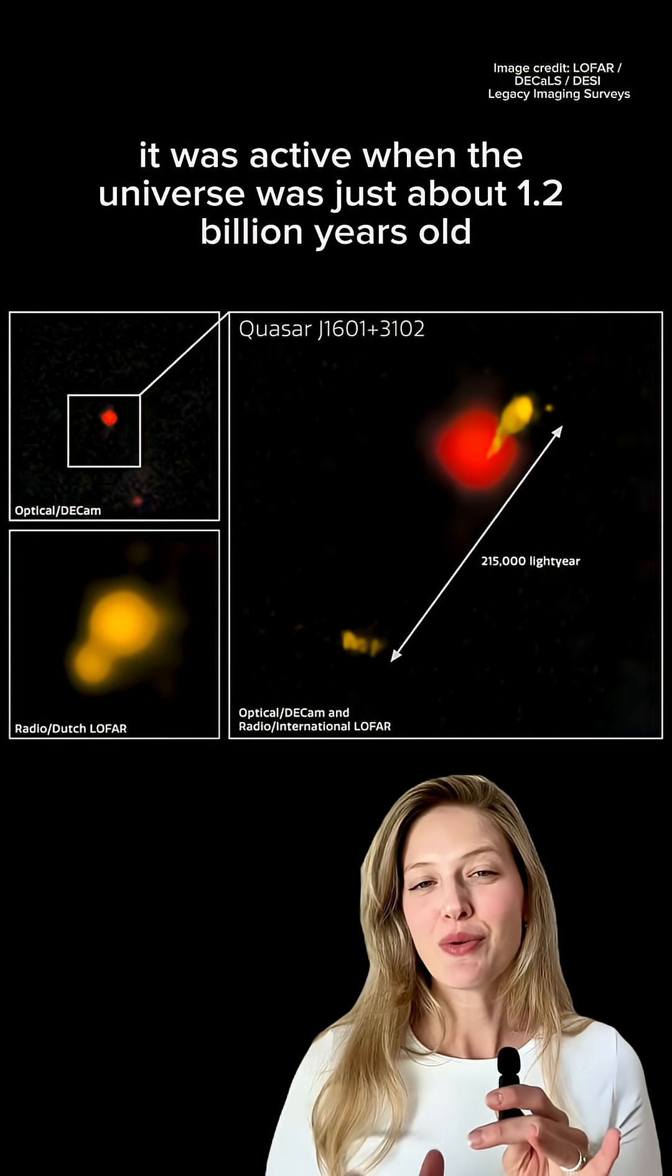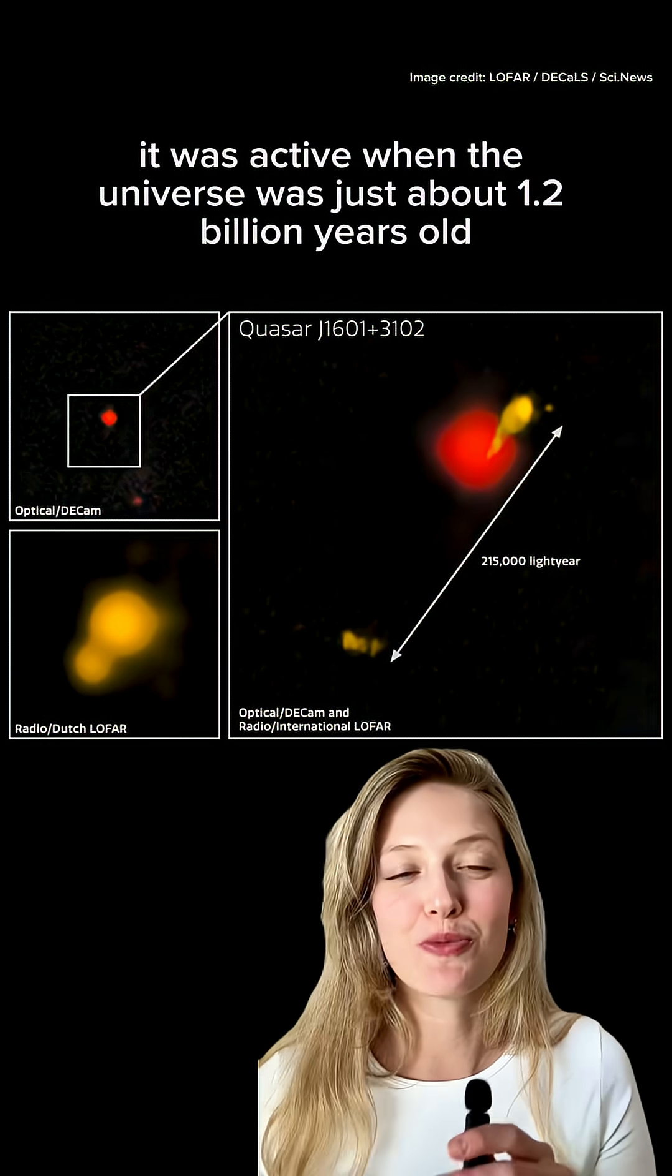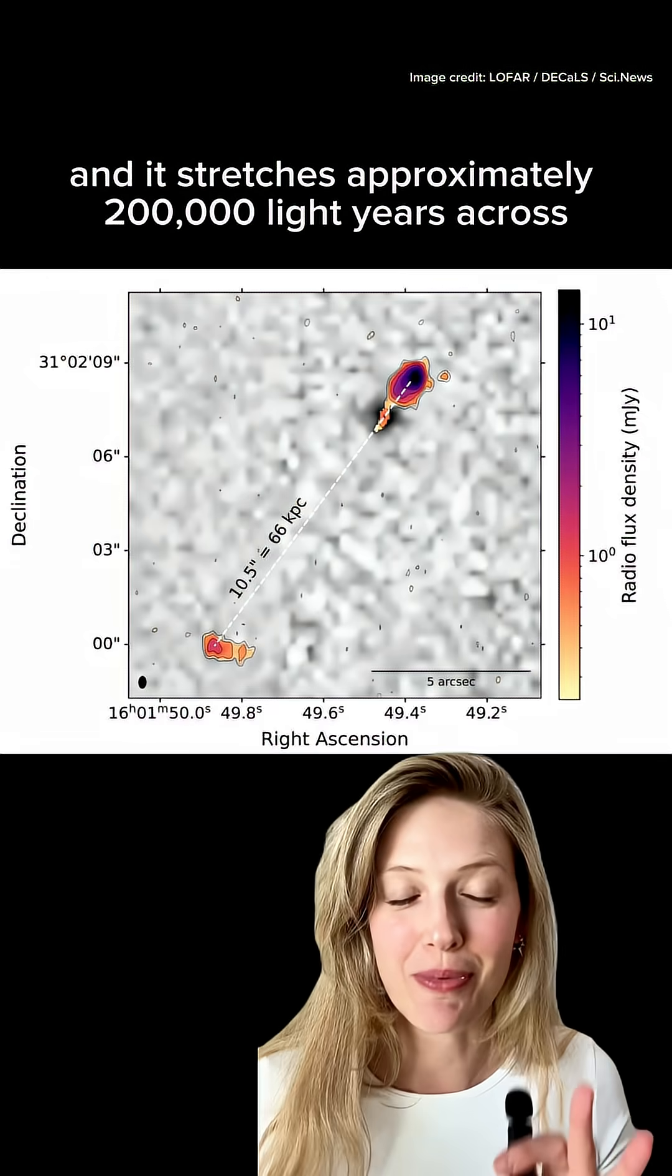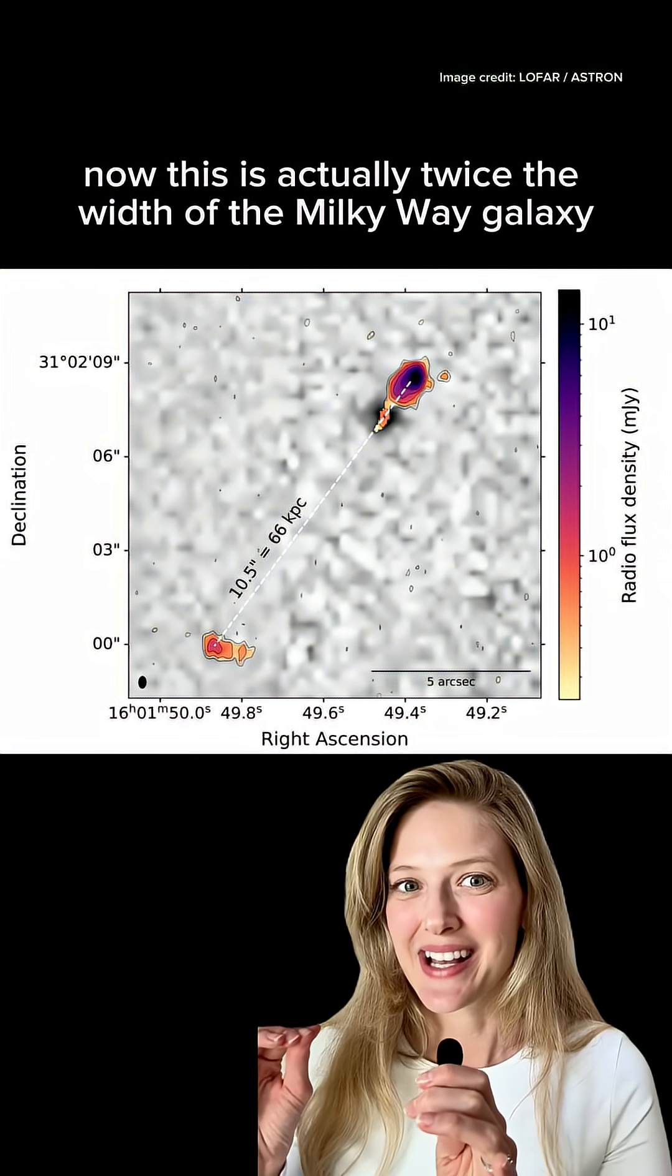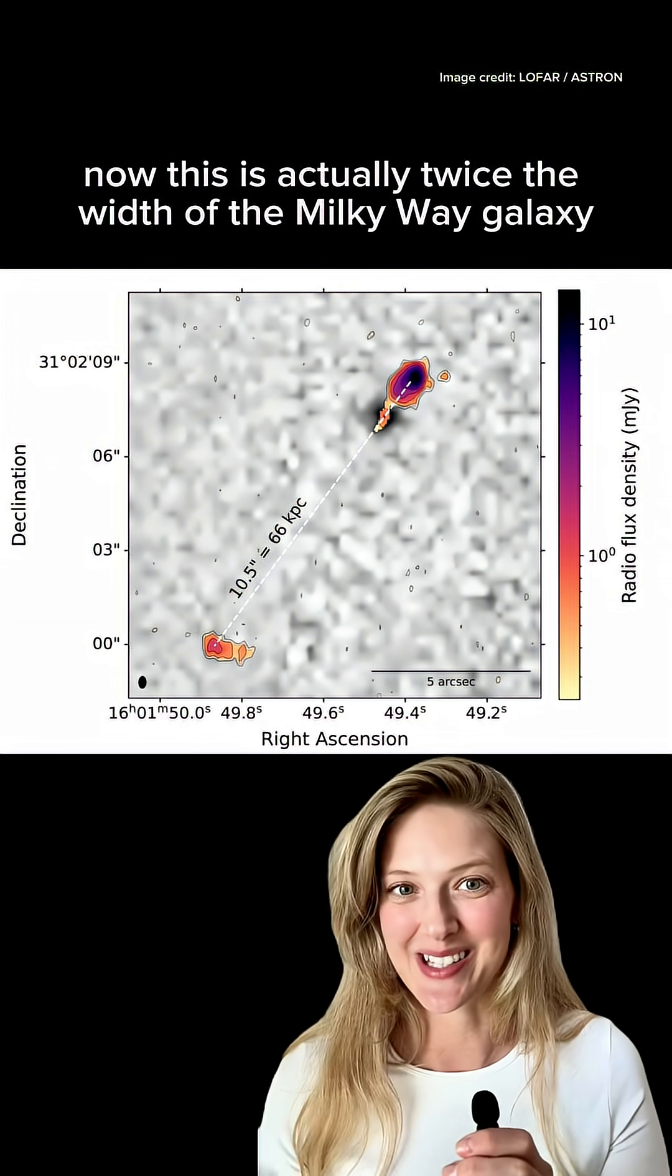It was active when the universe was just about 1.2 billion years old and it stretches approximately 200,000 light years across. This is actually twice the width of the Milky Way galaxy, so it's pretty crazy to really fathom it being that big.